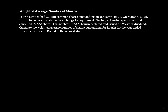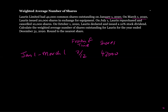Let's start by setting up our periods. The first period goes from January 1st to March 1st — that's the fraction of time, which is January and February: two months, so two over 12. The shares outstanding during that period are 42,000. We're also going to have a restatement column here for the stock dividend, and then a weighted average column.